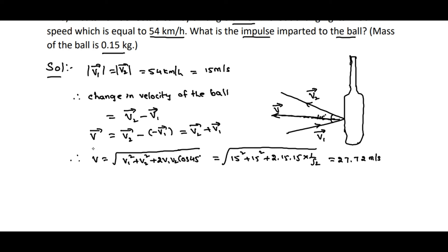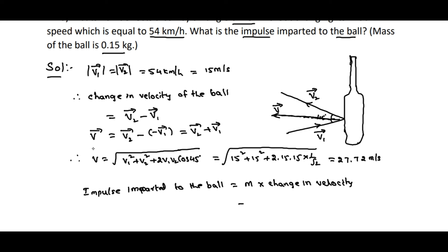The impulse imparted to the ball equals mass of the ball times change in velocity of the ball. The mass of the ball is 0.15 kilogram and the change in velocity is 27.72 meters per second. Therefore, impulse equals 0.15 × 27.72, which gives 4.16 kilogram meters per second.